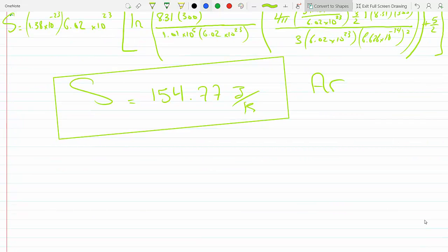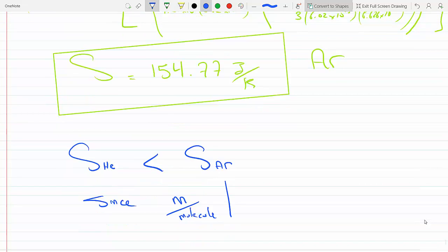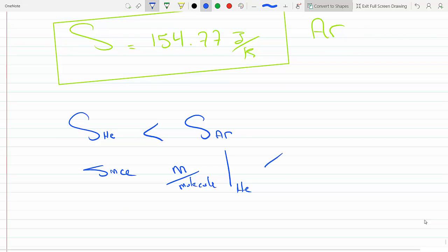Therefore, under the same conditions, the entropy for helium will be smaller than the entropy of argon. Since the mass per molecule for helium is smaller than the mass per molecule for argon, it makes sense. As the numerator goes up, the result goes up, and the entropy for argon will be greater than that of helium.